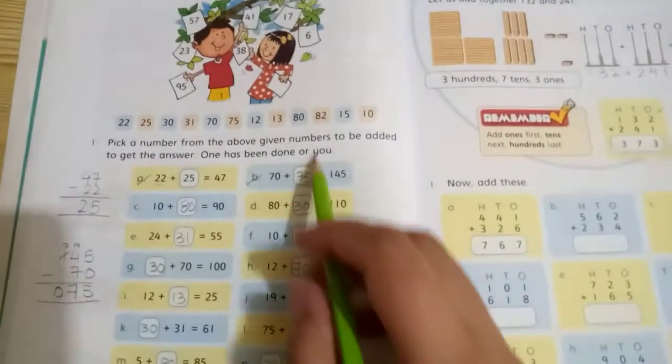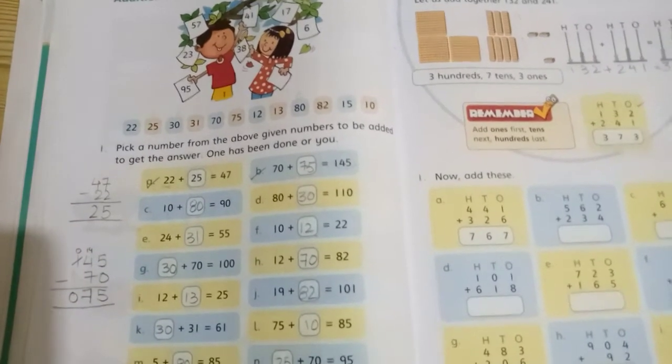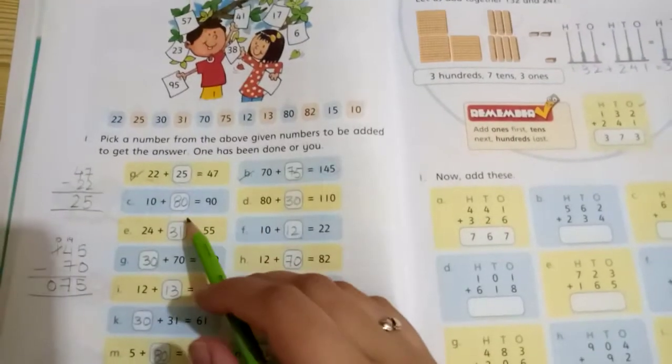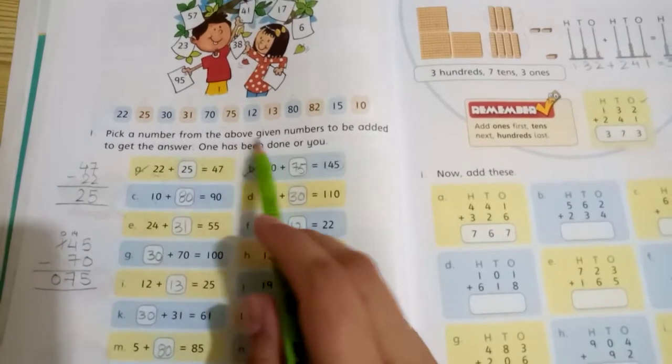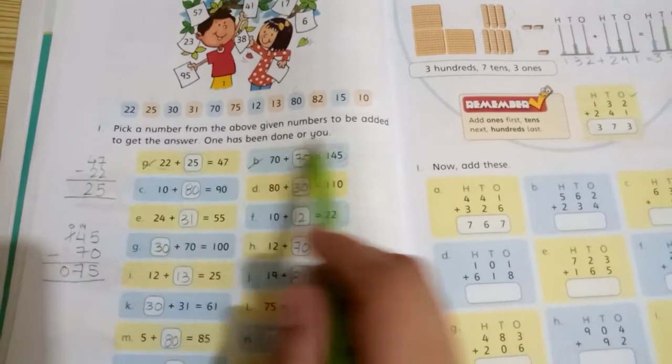What you have to do on this page: pick a number from the above given numbers to be added to get the answer. One has been done for you.